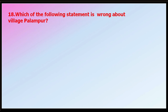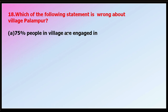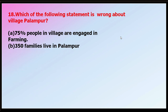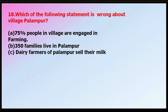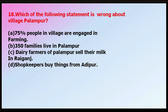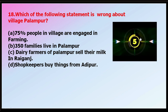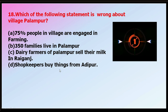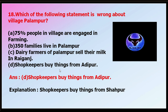Continuing on the village Palampur question: the options were 75% of people engaged in farming, 350 families in the village, dairy farmers selling milk in Rai Ganj, or shopkeepers buying from Adipur. Again the wrong statement is that shopkeepers buy things from Adipur — the correct fact is they buy from Shahapur. The other three statements about Palampur are correct.